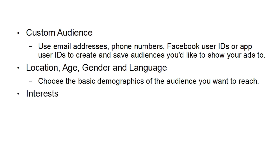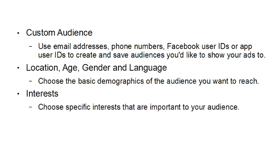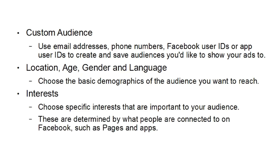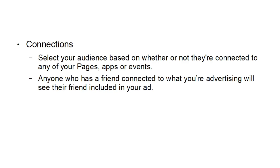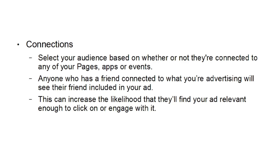You can choose by interest — you can pick specific interests that are important to your audience, determined by what people are connected to on Facebook such as pages or apps. So if you're in a hobby niche or a business niche, you can zoom straight in and only target those particular people. You can also select your audience based on connections — based on whether or not they're connected to any of your pages, apps, or events. Anyone who has a friend connected to what you're advertising will see their friend included in your ad, which can increase the likelihood that they'll find your ad relevant enough to engage with it.